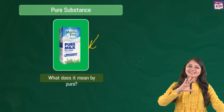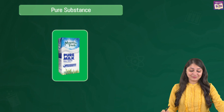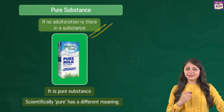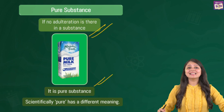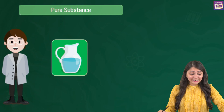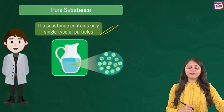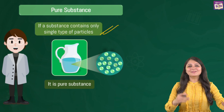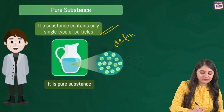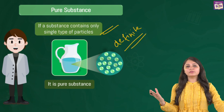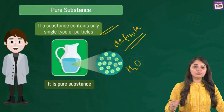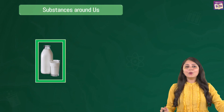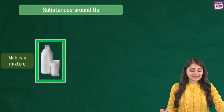But if you ask a scientist, the answer is going to be a big no. For a shopkeeper, when they say the product is pure, they mean there is no adulteration. But according to a scientist, a pure substance actually contains only one type of particles. For example, water has definite composition — it is always H₂O, irrespective of its source. So yes, water is a pure substance, and all pure substances have definite composition.